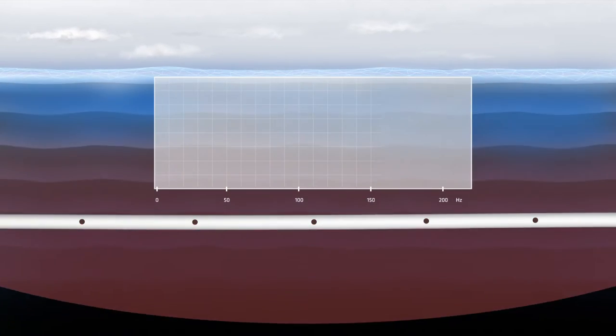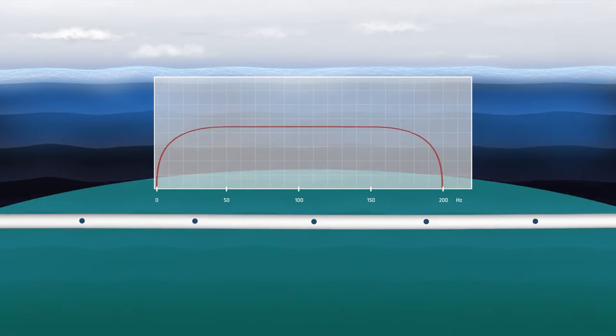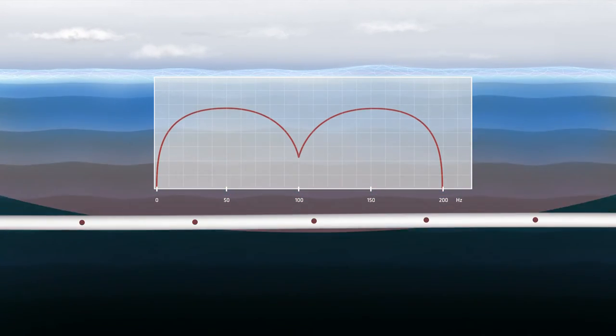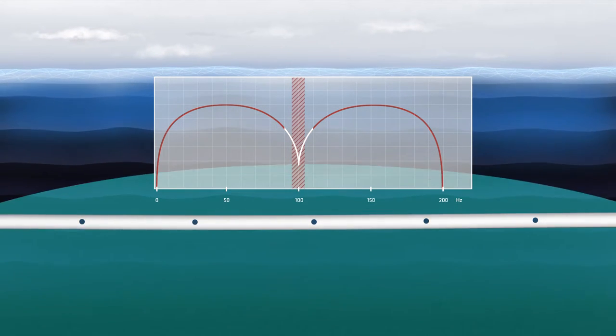The effect of ghosting is to cause interferences at particular frequencies dependent on the streamer depth, effectively attenuating some parts of the frequency range, creating periodic notches.